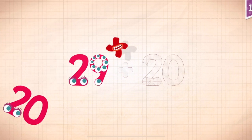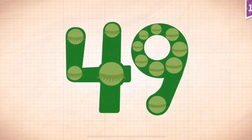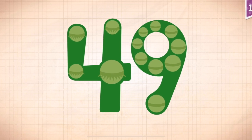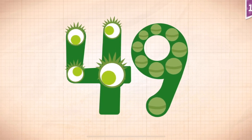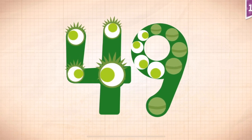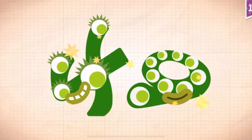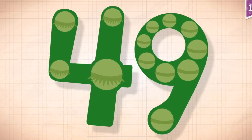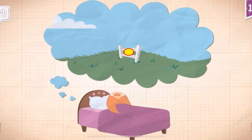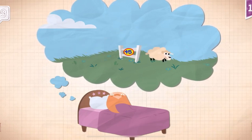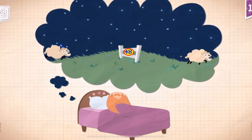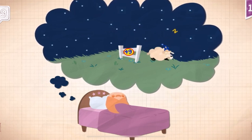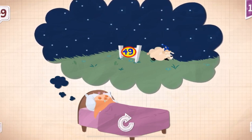29 plus 20 equals 49. Touch the monster's eyes to wake it up. 10, 20, 30, 40, 41, 42, 43, 44, 45, 46, 48, 49. Sherbert counted 49 sheep and finally fell asleep.